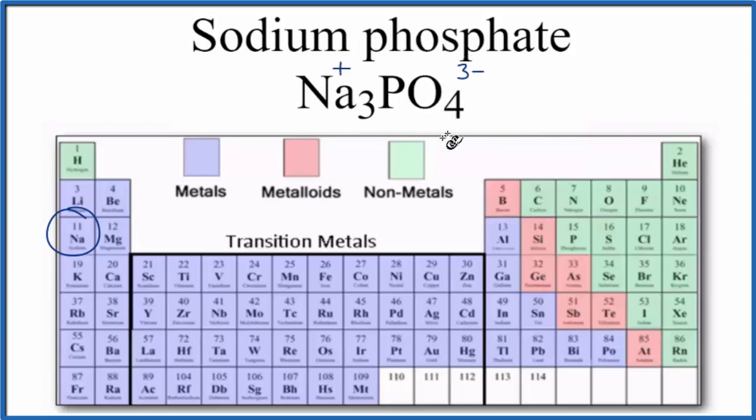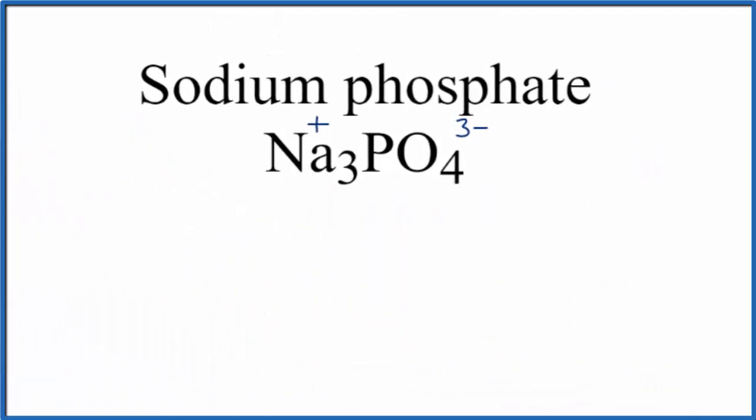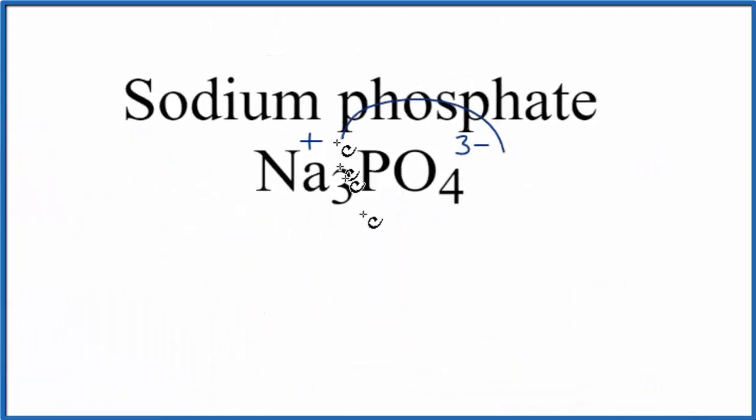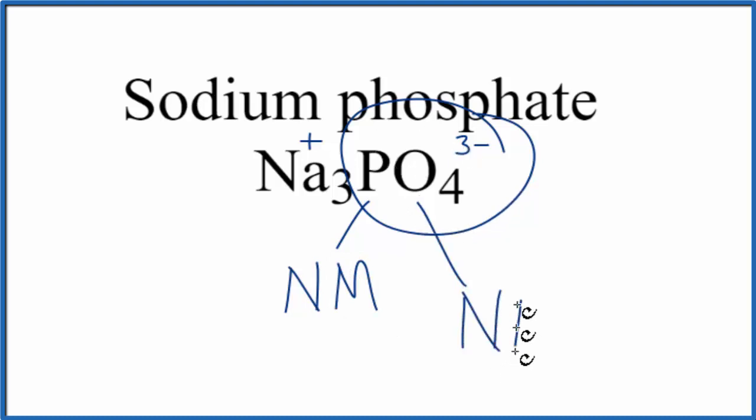Let's look a little closer at the phosphate ion. The phosphate ion, PO4 three-minus, has phosphorus, which we said was a non-metal, and then we have four oxygen atoms, which are non-metals as well.